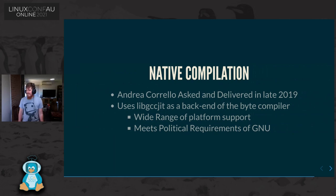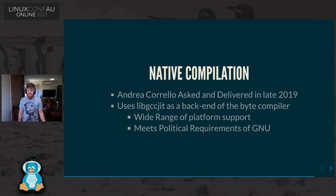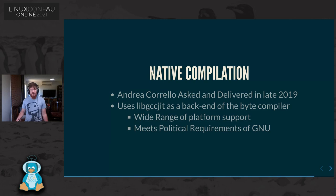It would be a miss not to mention native compilation, which has had huge ripple effects throughout the community — more so than pure GDK. Andrea Corallo asked in late 2019 whether anyone would be receptive to using libgcc JIT as a backend compiler for Emacs. A month later he had a working prototype — rough, crashed all the time, but it compiled and loaded. The stabilization since then has been incredible. It supports all the platforms we expect and meets the political requirements of GNU — we're not relying on LLVM, which is outside the GNU project.